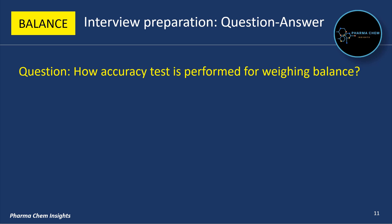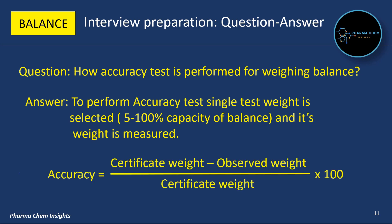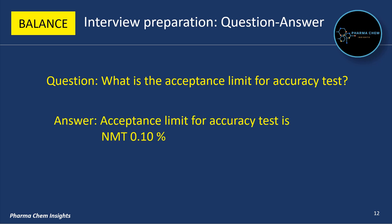Next question: how is the accuracy test performed for a weighing balance? To perform the accuracy test, a single test weight is selected between 5 to 100% of the balance capacity and its weight is measured. The formula to calculate accuracy is: Accuracy = ((Certificate Weight − Observed Weight) / Certificate Weight) × 100. The acceptance limit for the accuracy test is not more than 0.10%.